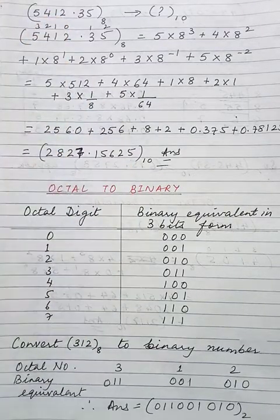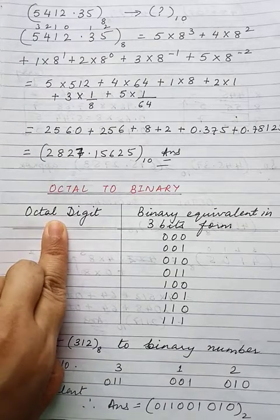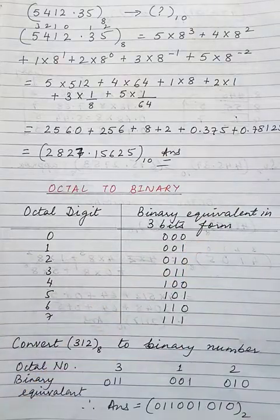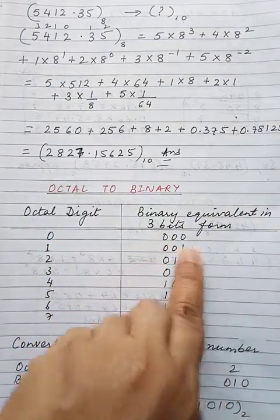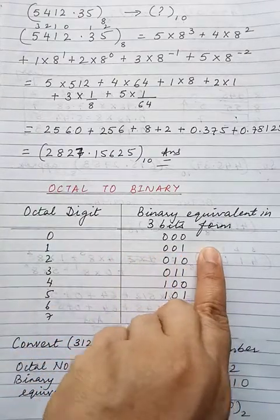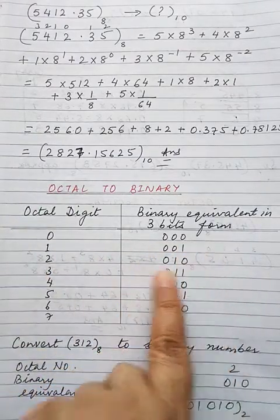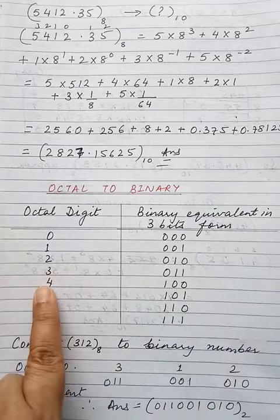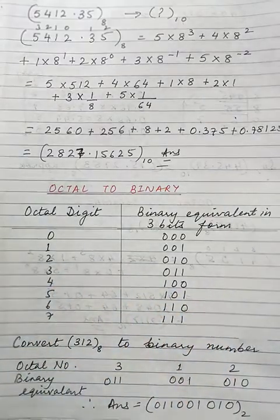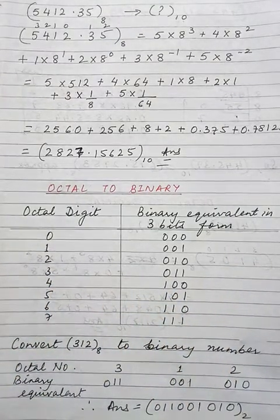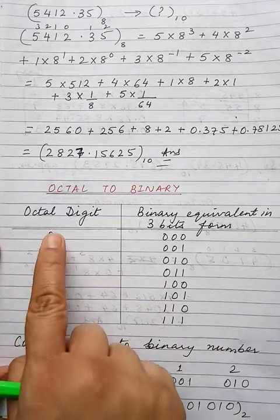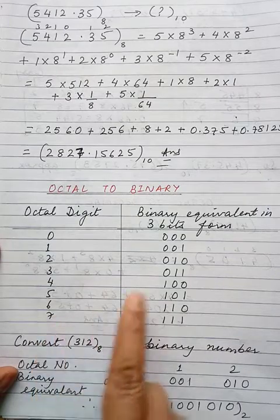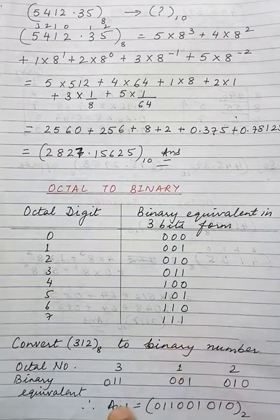The next conversion is octal to binary. Every octal digit can be converted into its binary equivalent in 3-bit form: 0 = 000, 1 = 001, 2 = 010, 3 = 011, 4 = 100, 5 = 101, 6 = 110, and 7 = 111. Octal numbers range from 0 to 7 and each binary equivalent is always in 3-bit form.